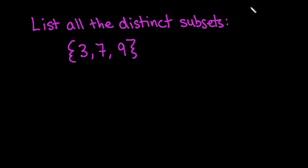Hi! For this video, I want to talk to you about how to list all the distinct subsets of a set. Remember, to find the number of distinct subsets, you would do 2 to the nth power. For this one, because we have three elements, 2 to the third power is 2 times 2 times 2, which is 8.